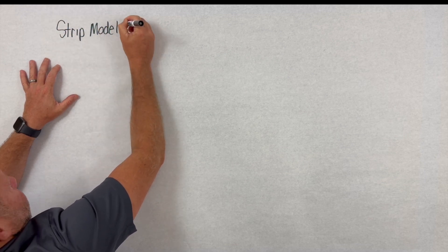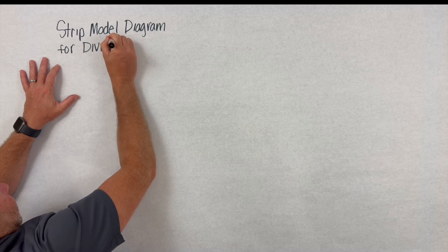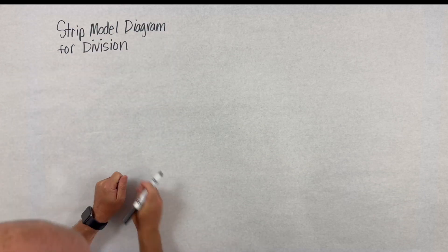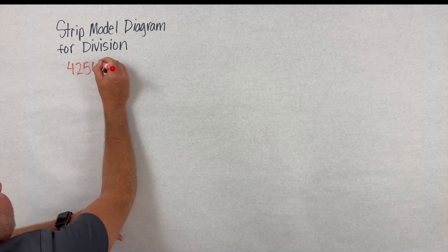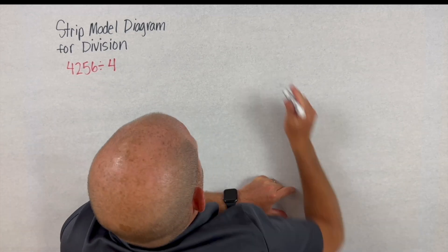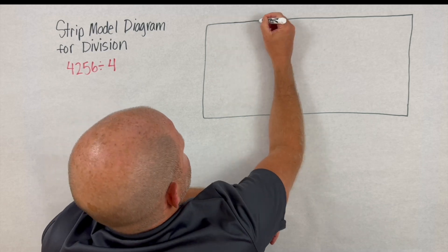In this video we're going to tackle a strip model diagram and how we can use it when we begin to tackle division. As students begin to expand their understanding of division and basic facts, they gradually get to a place where they'll need to divide a four-digit dividend and a one-digit divisor.